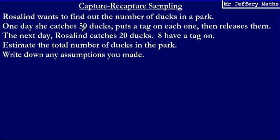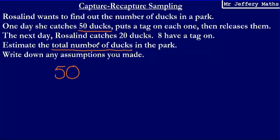I'm going to pick out some key information from this question. The first is about the number of ducks that she caught on the first day. She caught 50 ducks on that first day, and to answer this question I need to think about how many ducks that is in comparison with the total number of ducks in the park. I don't know the total yet, so I'm going to say she caught 50 ducks out of the total number of ducks in the park, which I'm going to call X.